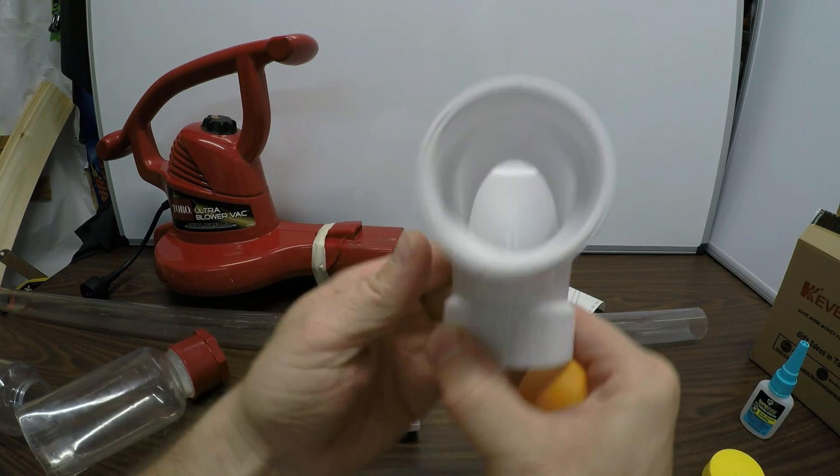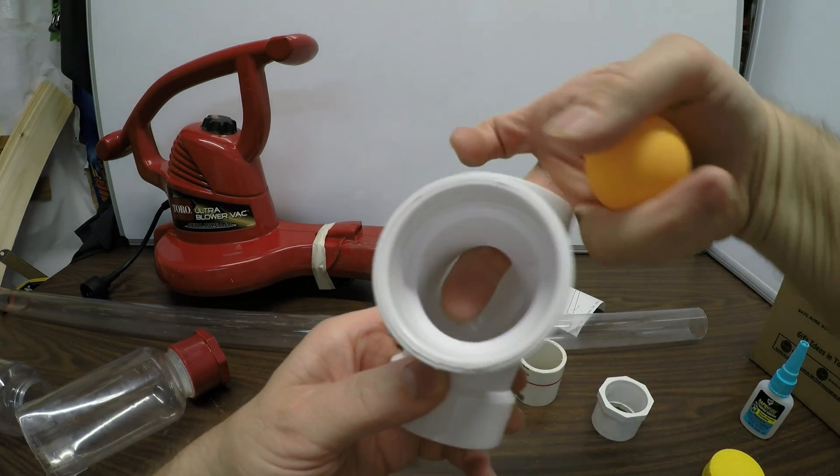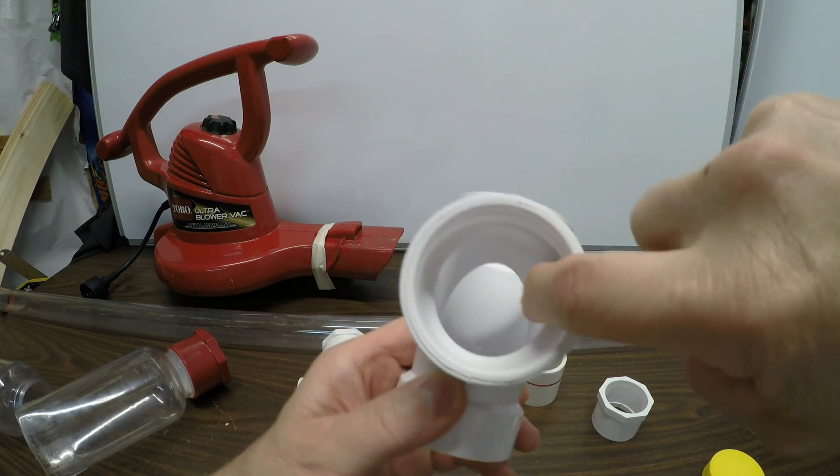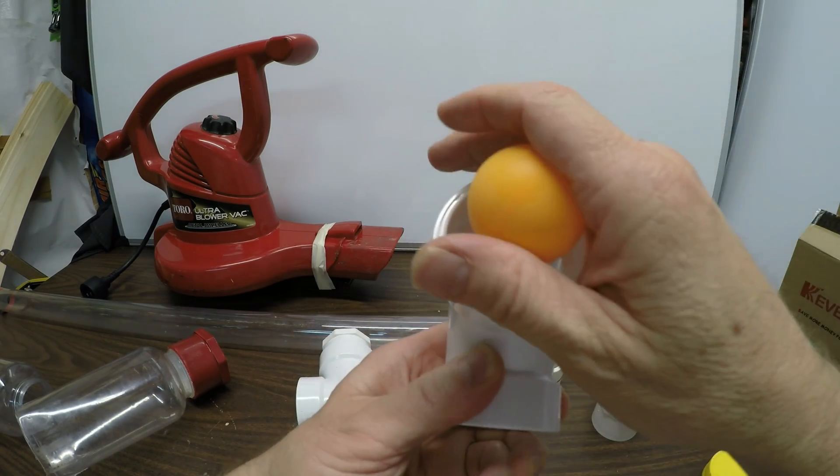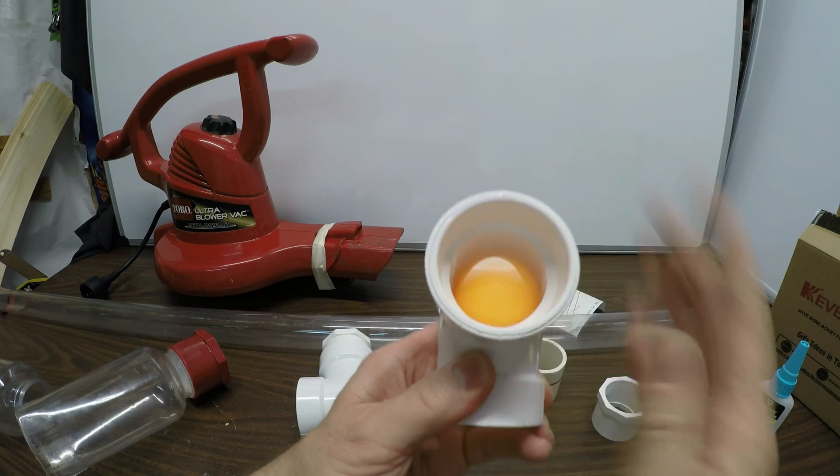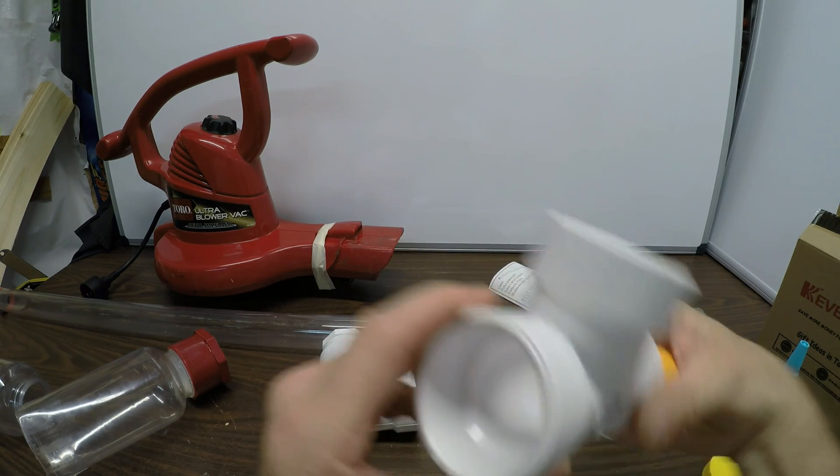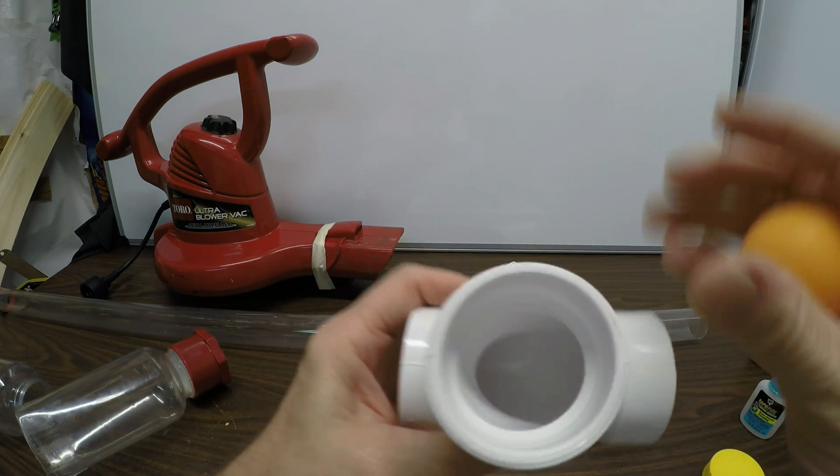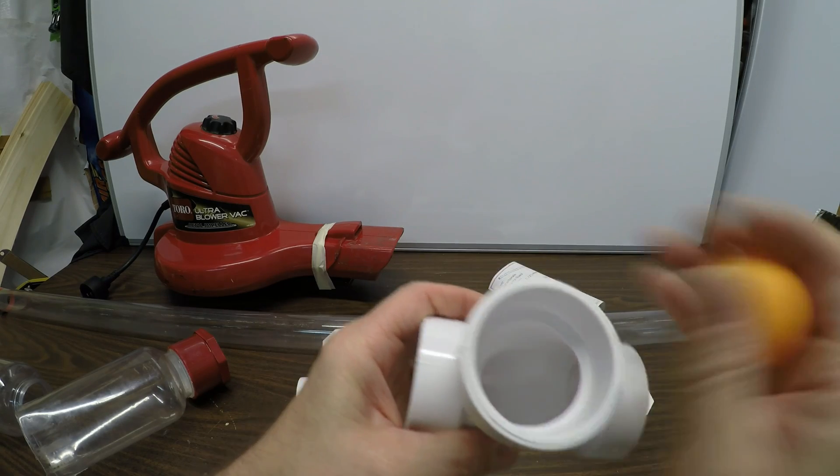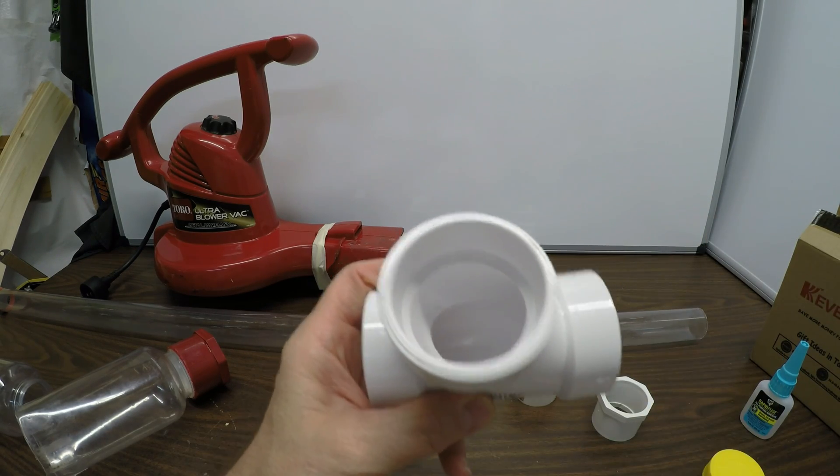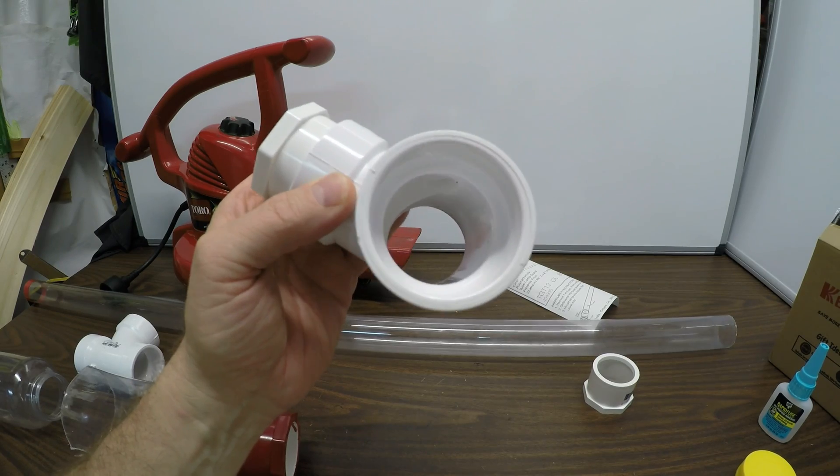And if you can see there, there's this little lip on the inside right here. And that just allows, it angles the balls in so they don't really backfire in the back here. They just go straight down in and through. So it gives them a little bit of angle.